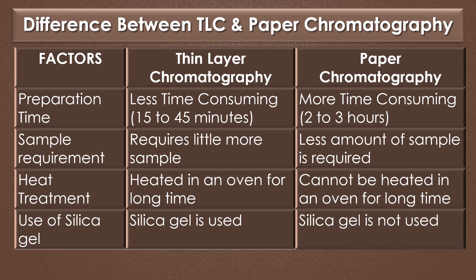Next, preparation time. Thin layer chromatography is a less time-consuming method — it requires only 15 to 45 minutes. But paper chromatography is a more time-consuming technique; it requires 2 to 3 hours. Regarding sample requirement, thin layer chromatography requires a little more sample than paper chromatography, while paper chromatography requires less amount of sample.